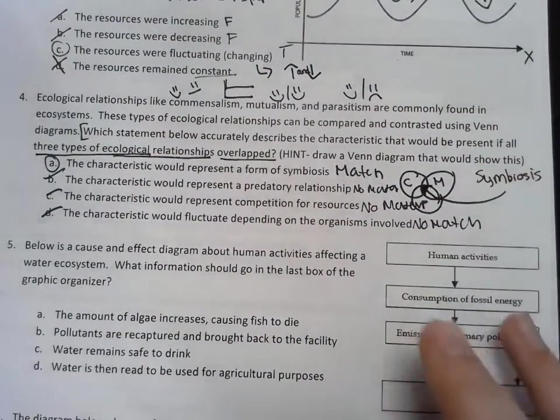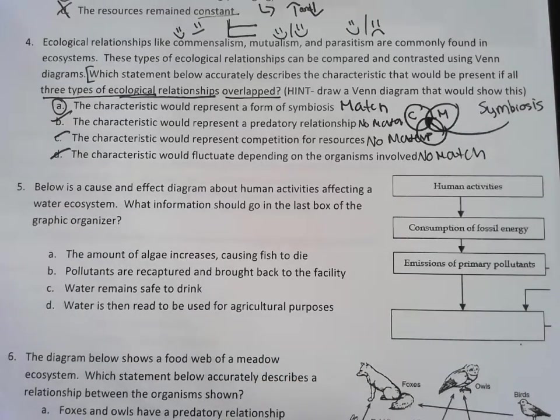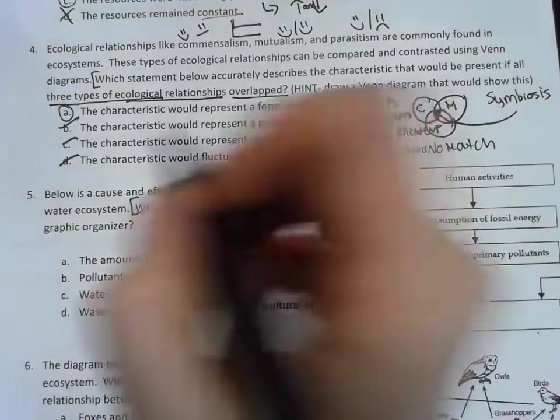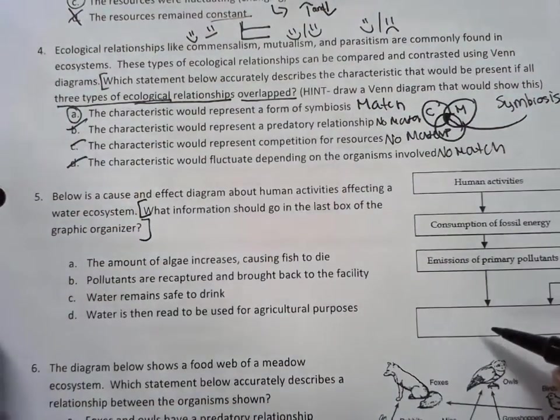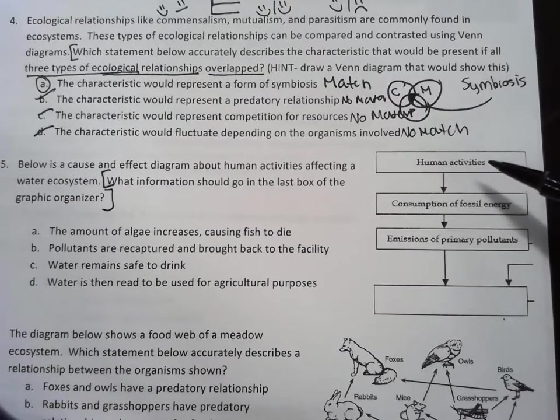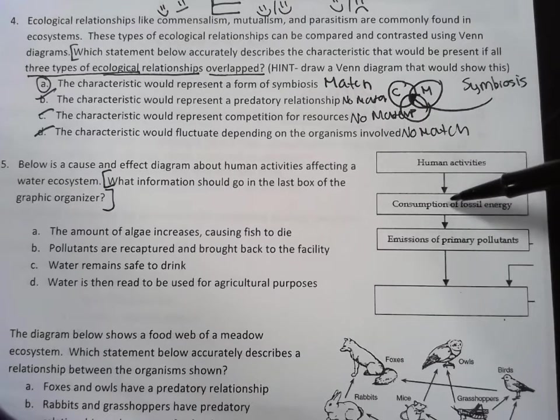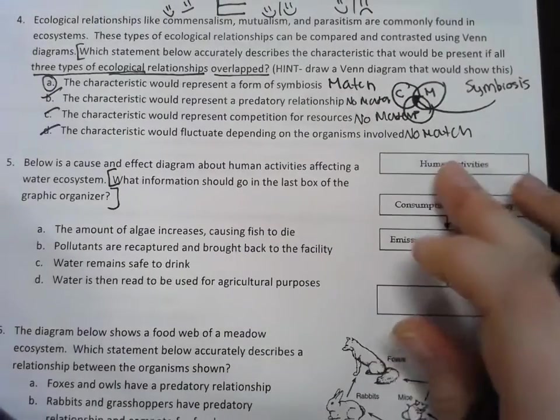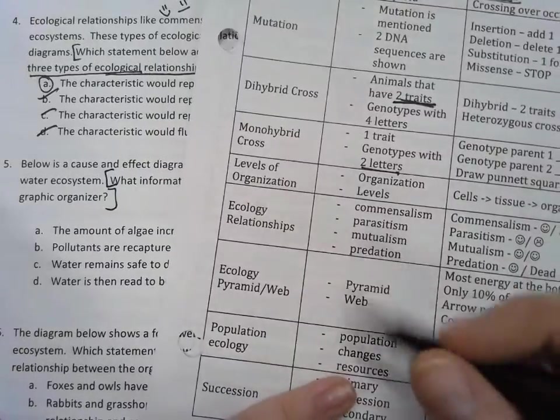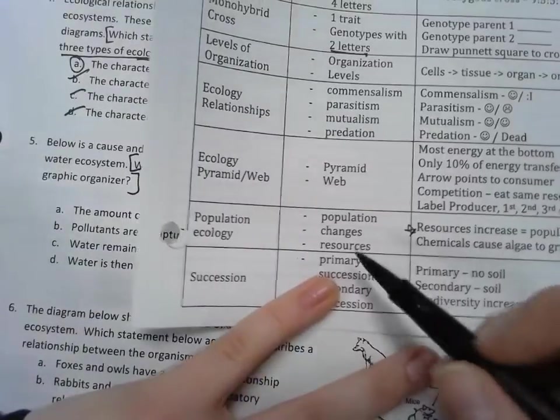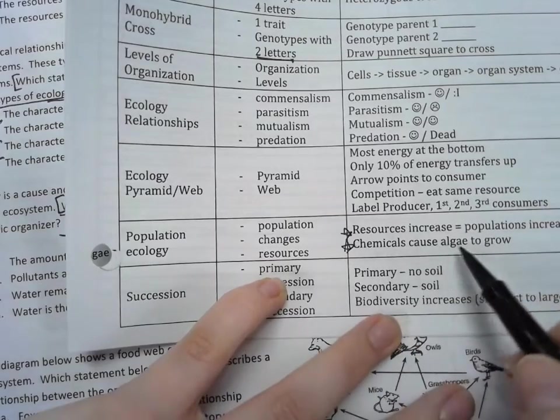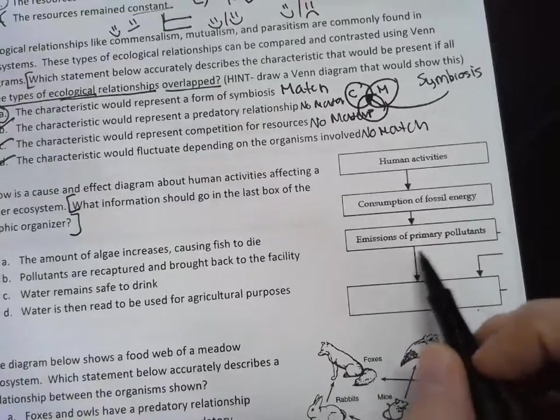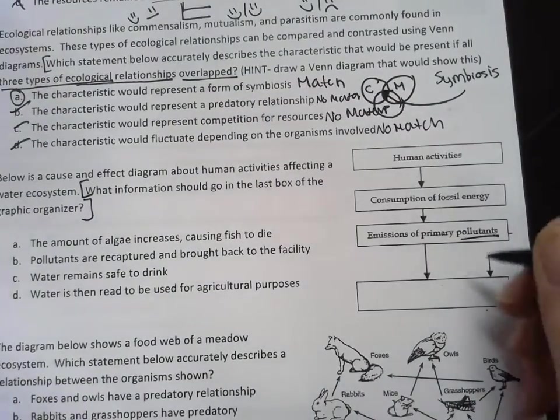Number five: below is a cause and effect diagram about human activities affecting a water ecosystem. What information should go in the last box of the graphic organizer? So if I go through here, it's telling me that human activities caused the consumption of fossil energy, which caused emissions of primary pollutants. Because I'm talking about a specific population, that means that I should go here. And the other key point that was said is that chemicals cause algae to grow.